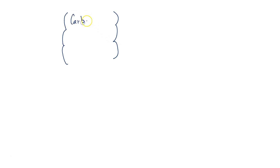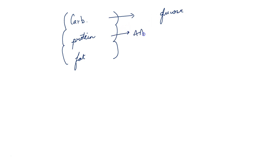The well-fed state is the time when you've just had your food and that food has just gotten absorbed from the intestines. What do we have in our food? We have carbohydrates, proteins, and fat. Carbohydrates get absorbed as glucose, proteins are absorbed as amino acids, and fat is absorbed as chylomicrons.